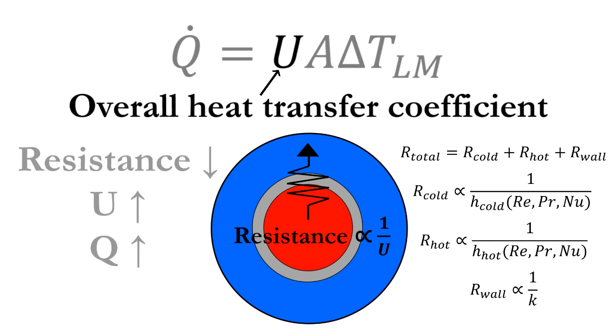The total resistance is the sum of the individual resistances for the hot side, cold side, and pipe walls, which can be calculated using empirical correlations or found in a table.